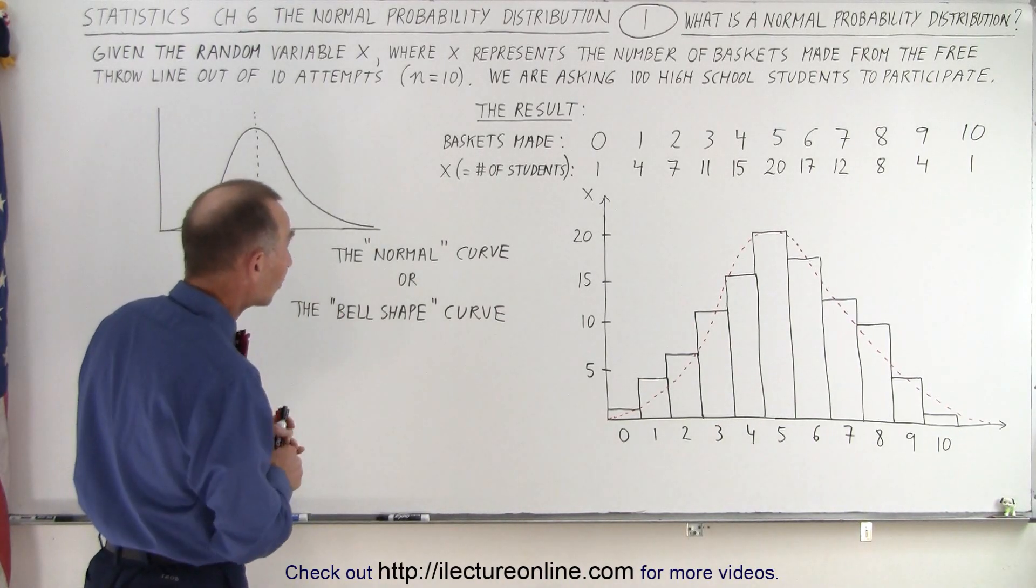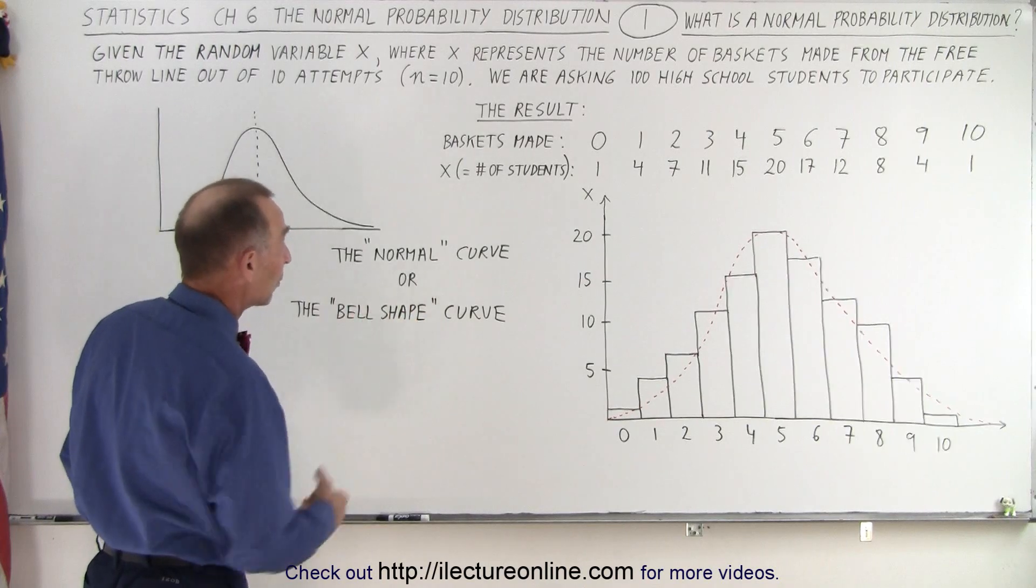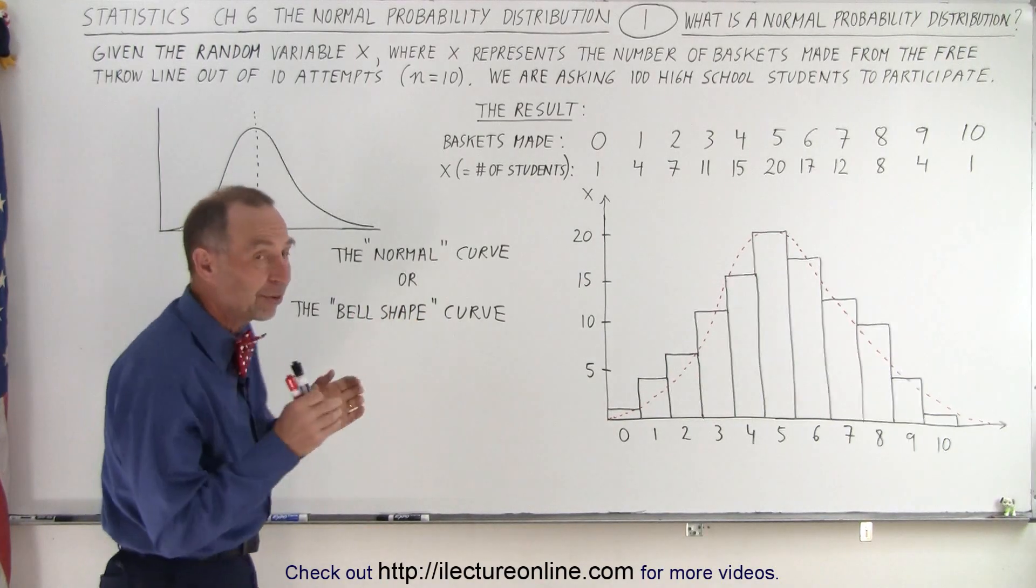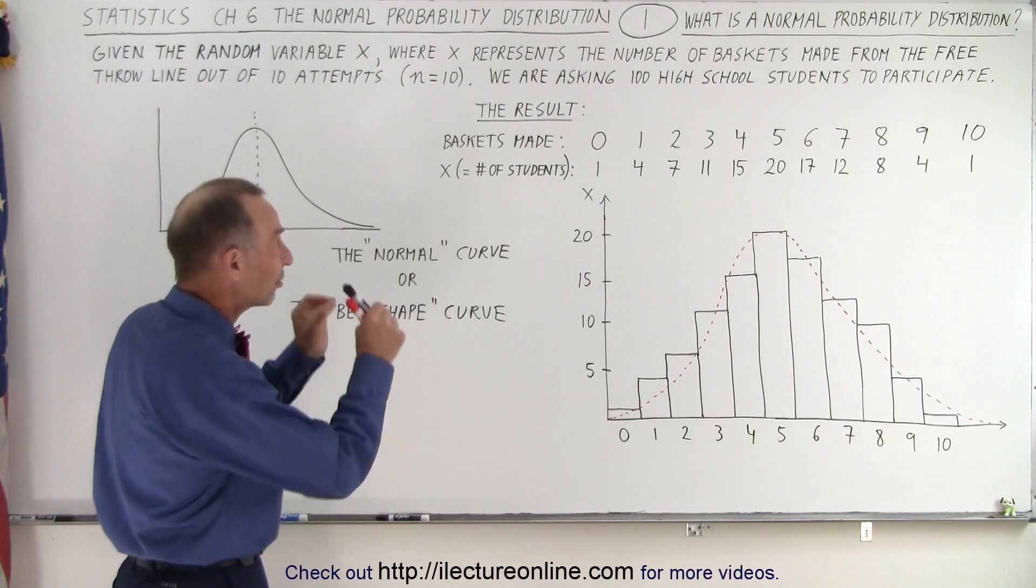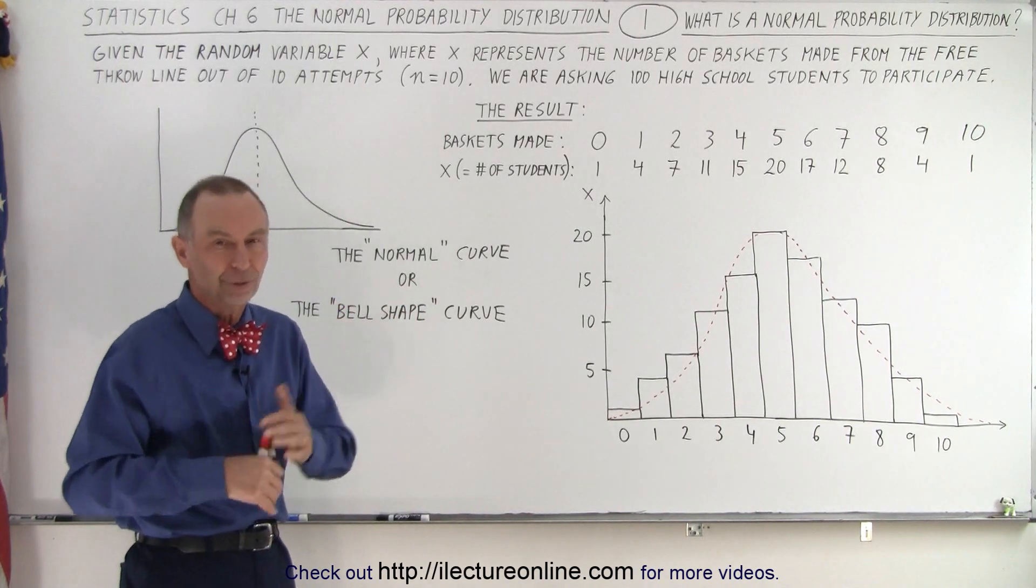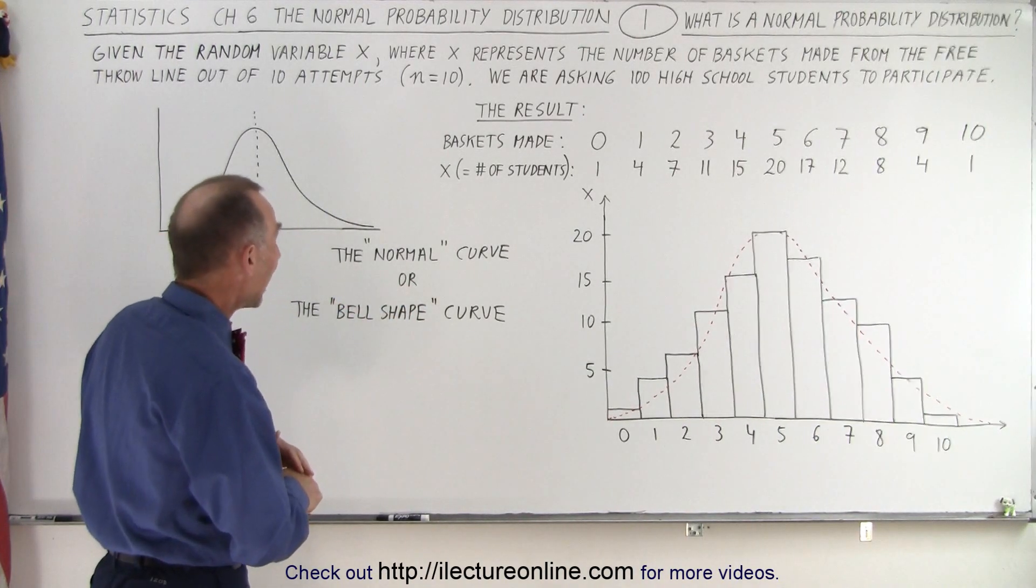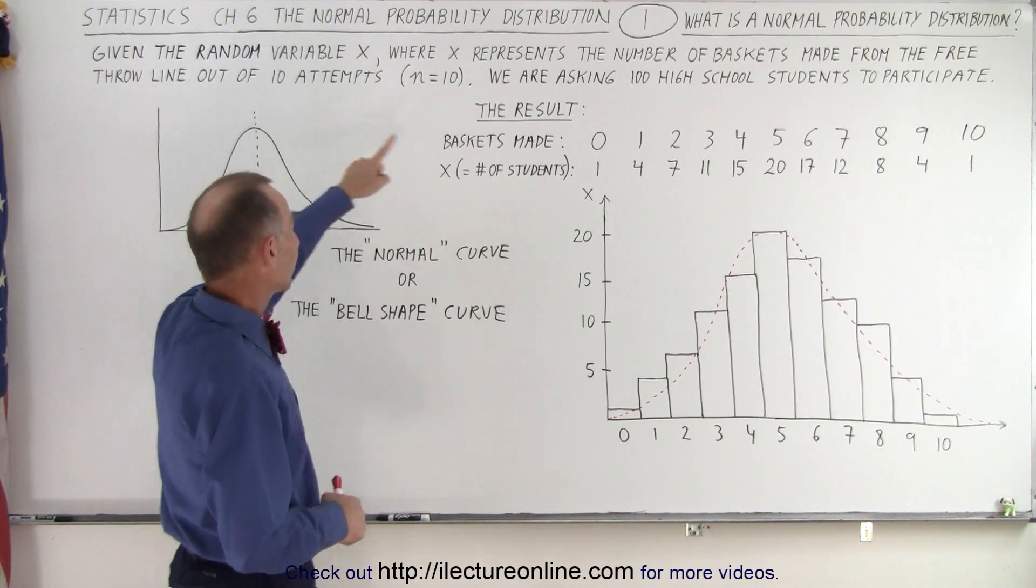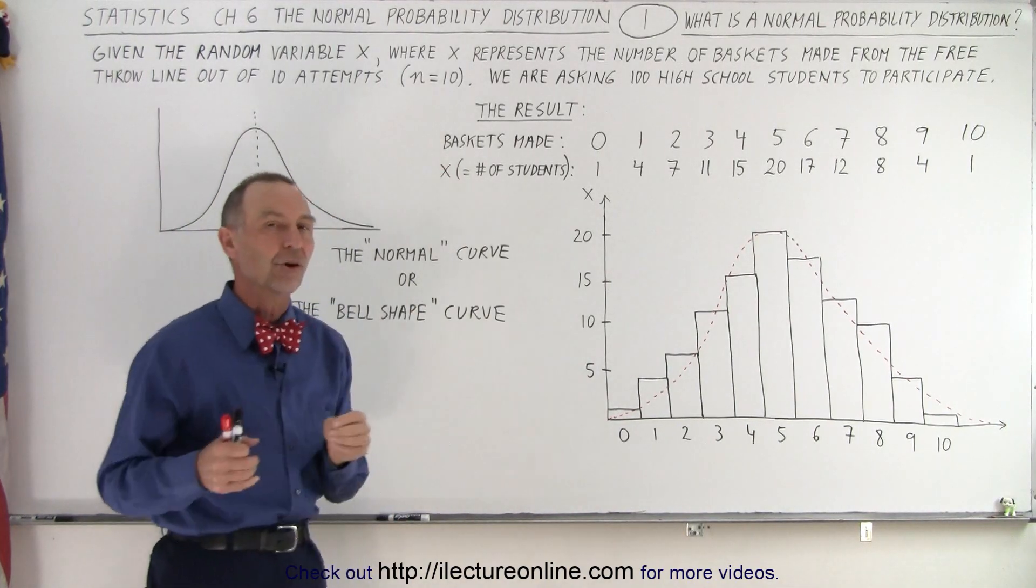All right, then we have a variable x that represents that random number, that random variable. And in this case, it represents the number of baskets made from the free throw line. So we're going back to basketball.